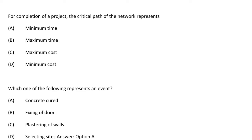The first question: for completion of a project, the critical path of the network represents — option A minimum time, option B maximum time, option C maximum cost, option D minimum cost. The correct answer is option B, maximum time.